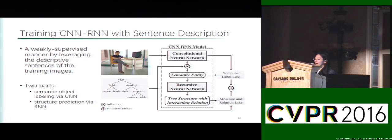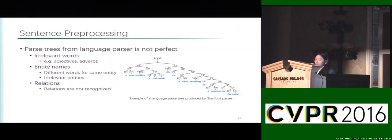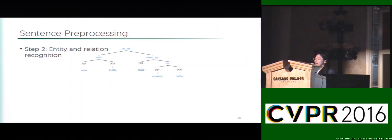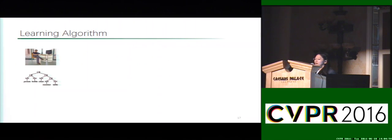We train the model with an EM-based algorithm. This algorithm alternates between predicting the latent state configurations by transferring knowledge from the semantic trees, and optimizing network parameters. We first preprocessed sentence parse trees generated by a language parser. But parse trees are often imperfect, including irrelevant words such as adjectives, different words for the same entities, and mixed relations. So we first use POS-tag filtering to remove some irrelevant words, and then we summarize the important entities and relations. This results in a regularized tree compatible with our model.